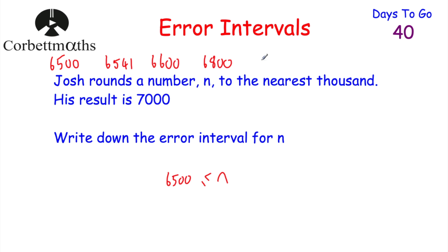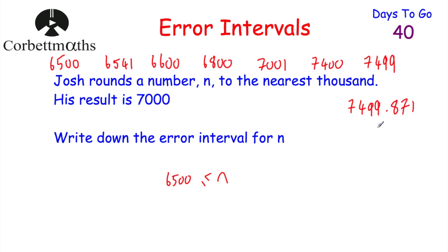Now let's think of a number bigger than 7,000. It could be 7,001, 7,400, 7,499, or even 7,499.871 — all round to 7,000. But it couldn't be 7,500, because 7,500 would round up to 8,000. So N could be any number up to 7,500: N is bigger than or equal to 6,500, but less than 7,500. Well done if you got that.